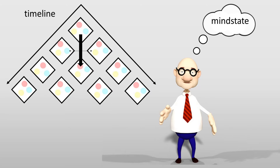A central idea for this project is that there are multiple time dimensions. Quantum phenomena that appear weird in a single time dimension are a logical consequence of multiple time dimensions. We already discussed this in the first two videos, so let's move on to point 2.